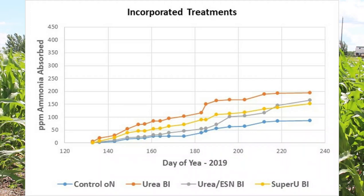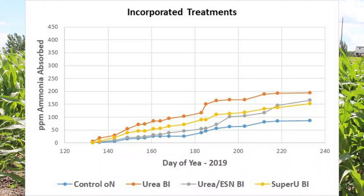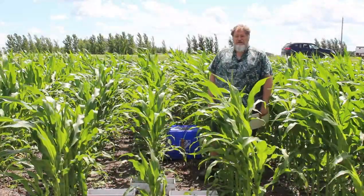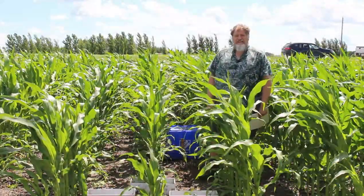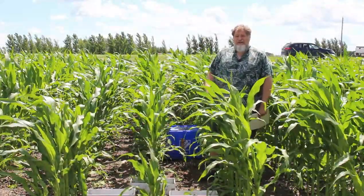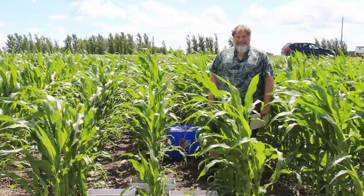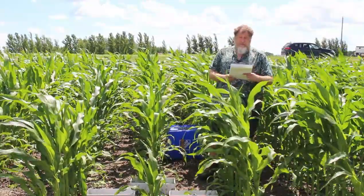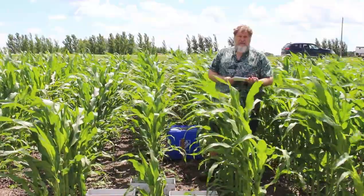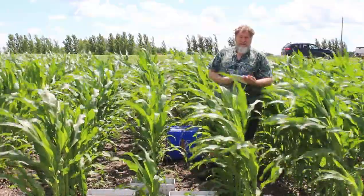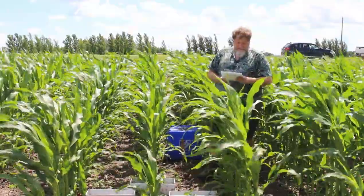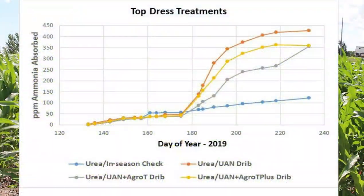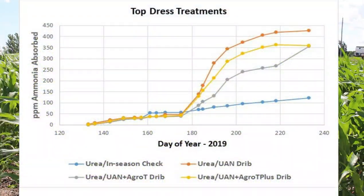Some years those ammonia losses will be agronomically important, especially when we're fine-tuning nitrogen rates and not applying more than we need. It's really important to retain that nitrogen by lowering ammonia volatilization using those products. For in-season application, ammonia loss was higher than at planting.